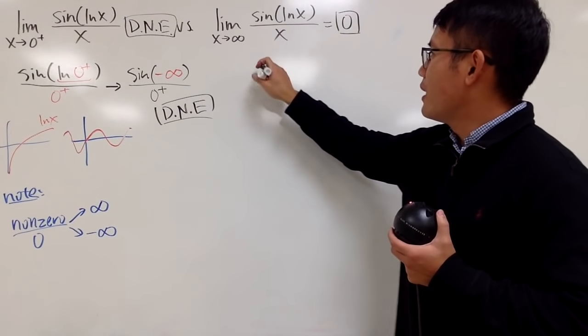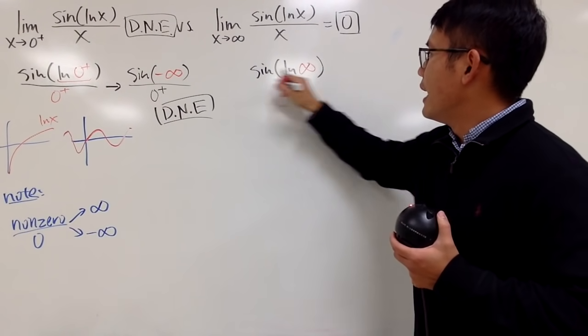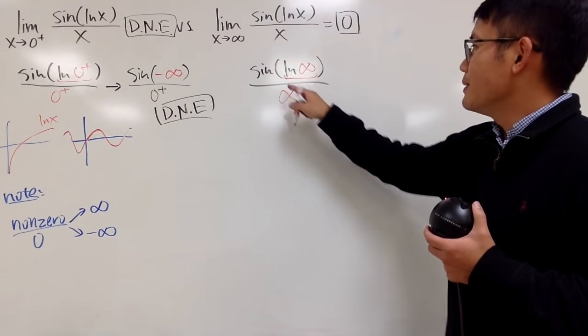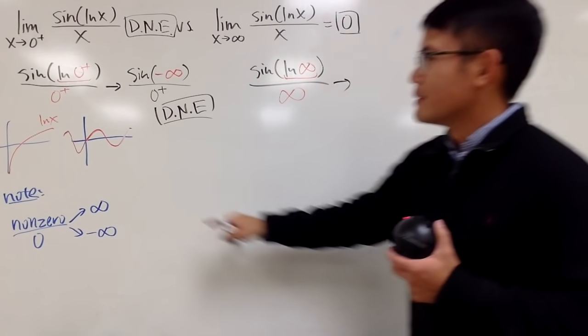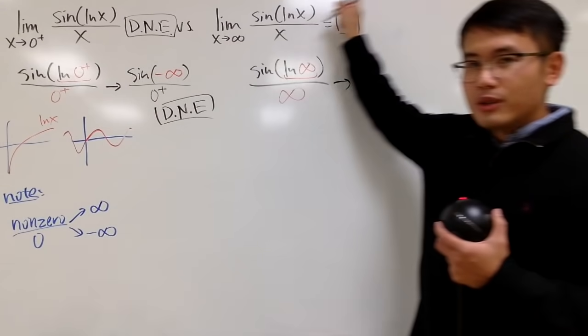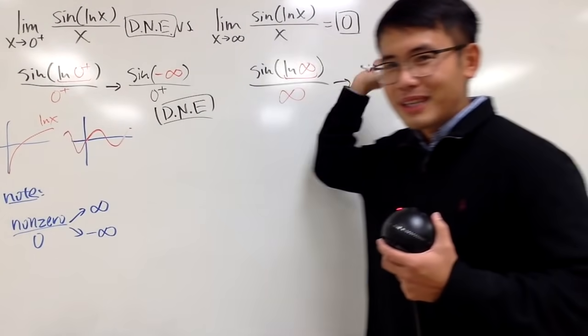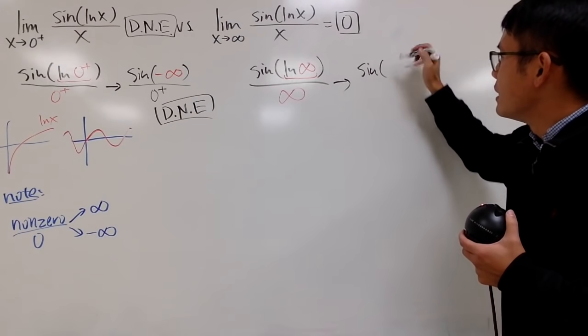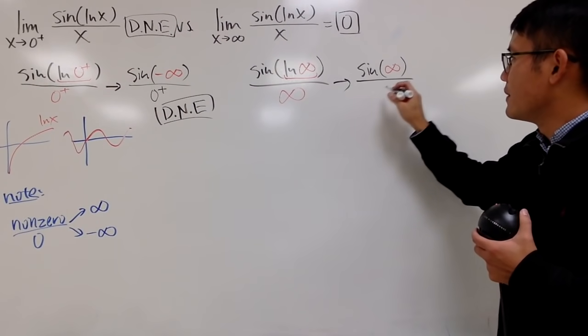Still, I will plug infinity into here. I see I have sin of ln of infinity and then over infinity. Well, ln of infinity, this right here, ln actually goes to infinity. It doesn't do like that, it doesn't go like that, but it actually goes up to infinity. So, inside here, you have positive infinity this time. So, sin of infinity like this, over infinity now.